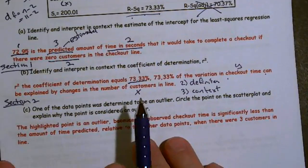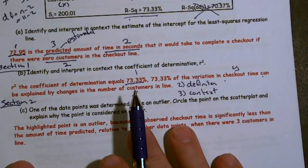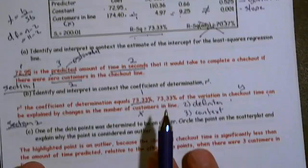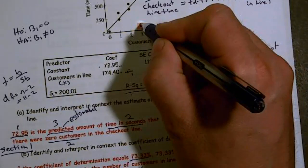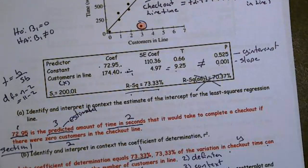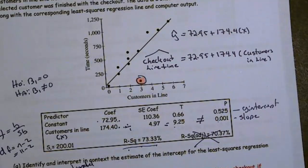One of the data points was determined to be an outlier. Circle the point on the scatterplot and explain why it's considered an outlier. There is our outlier. Well, why is it an outlier? Well, it's an outlier because relative to the other data points, it's in the wrong place.